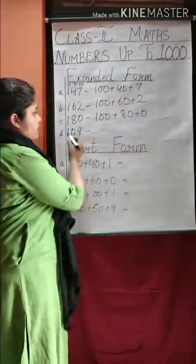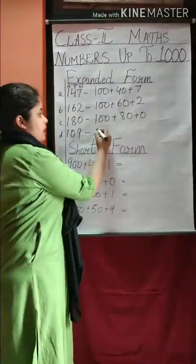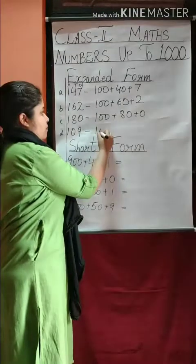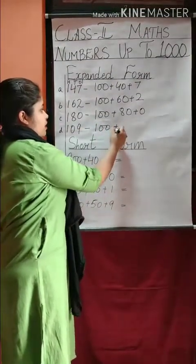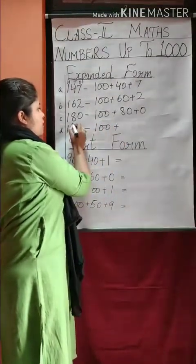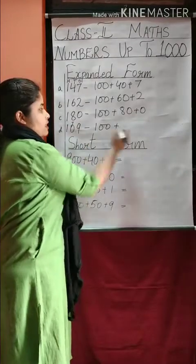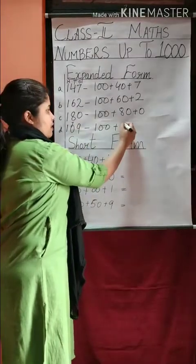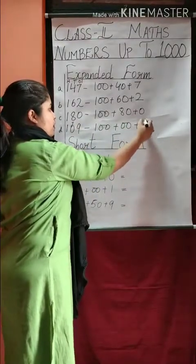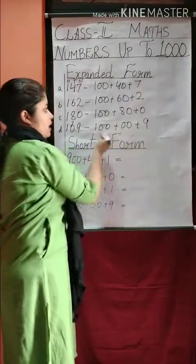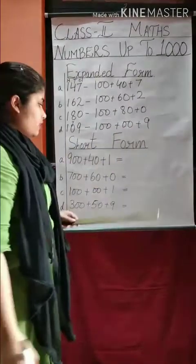Next is one hundred nine. One hundred — zero is in the 10's place, so we write zero there — and nine. So the expanded form is one hundred plus zero plus nine.